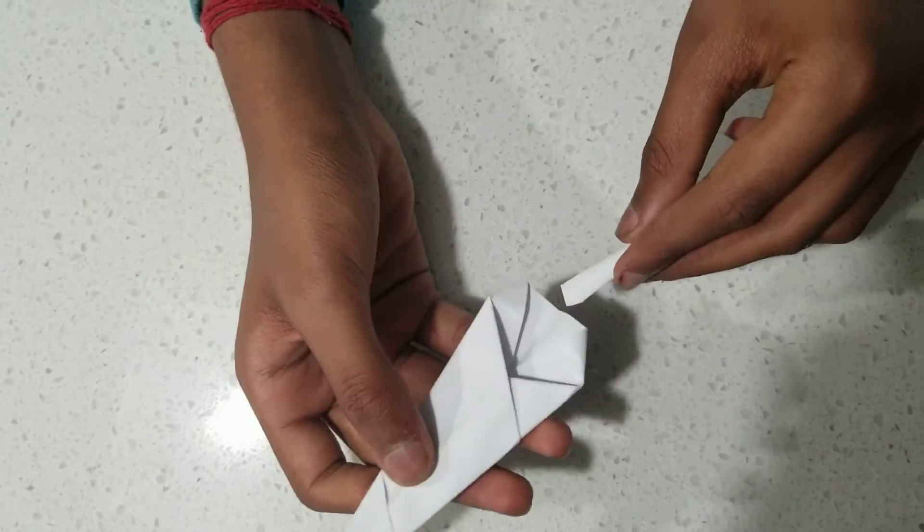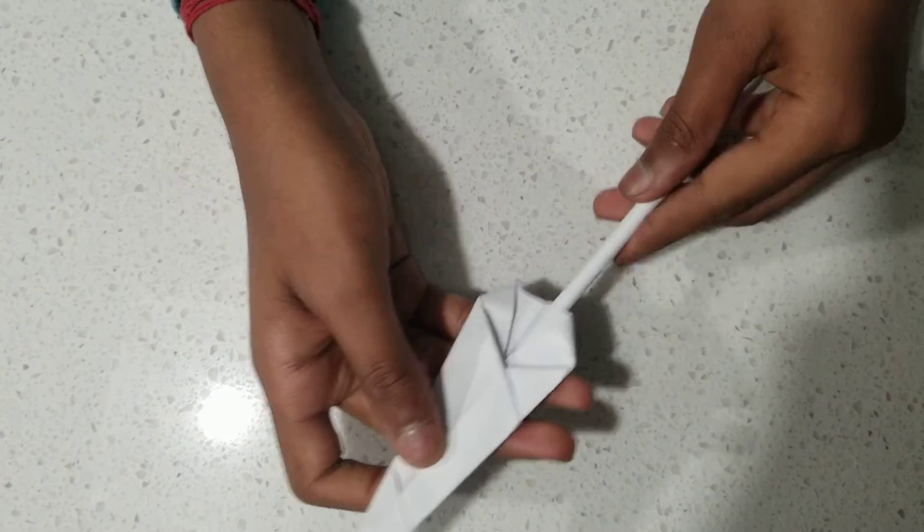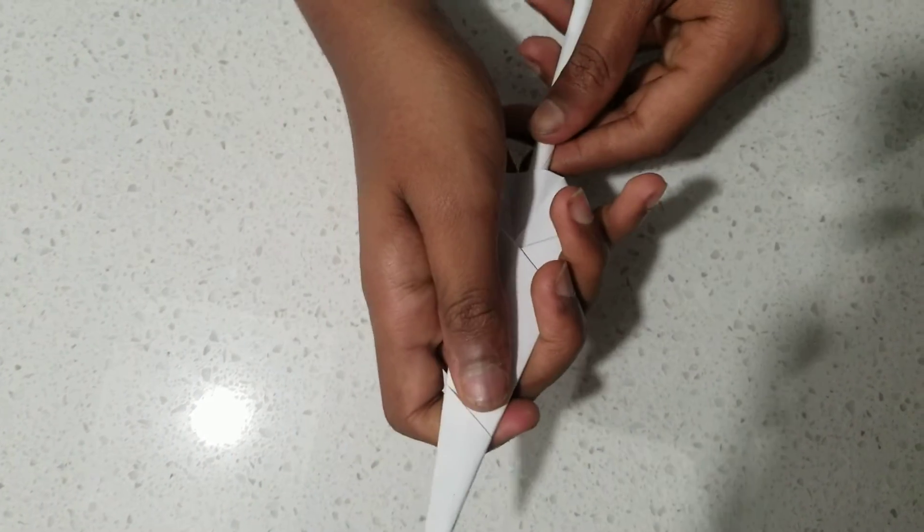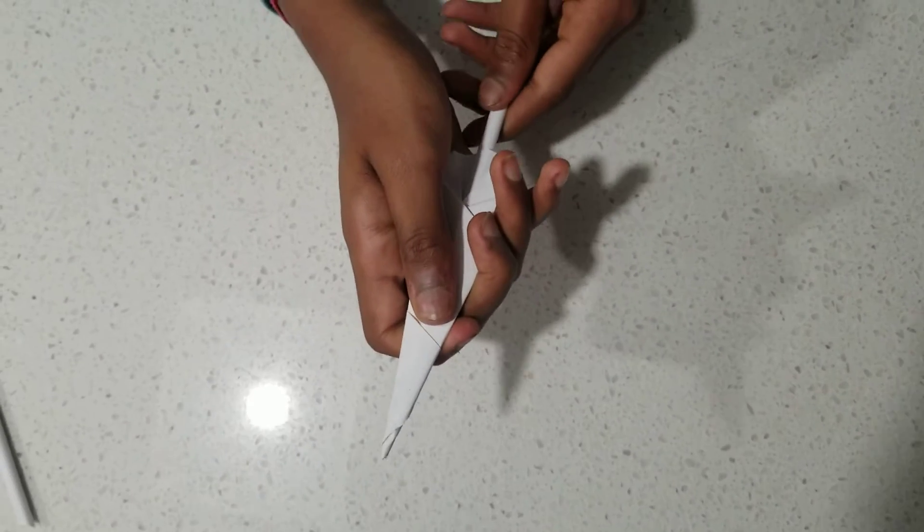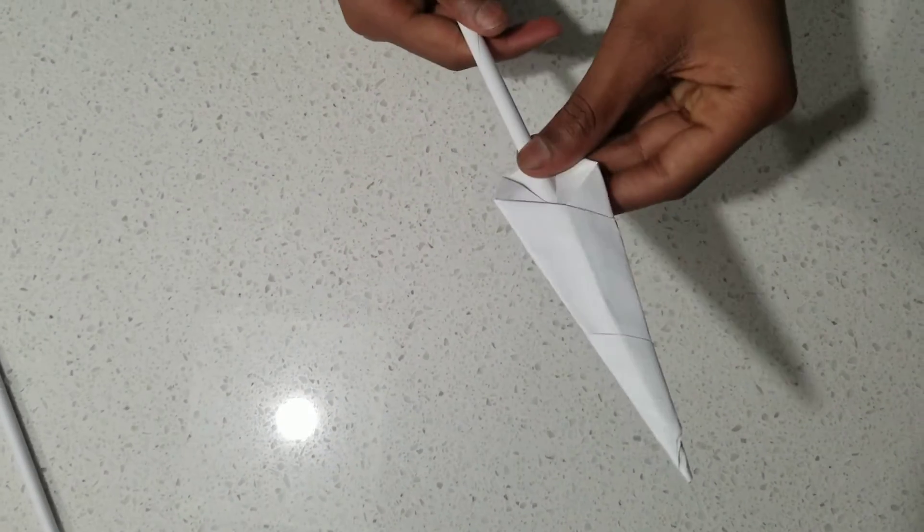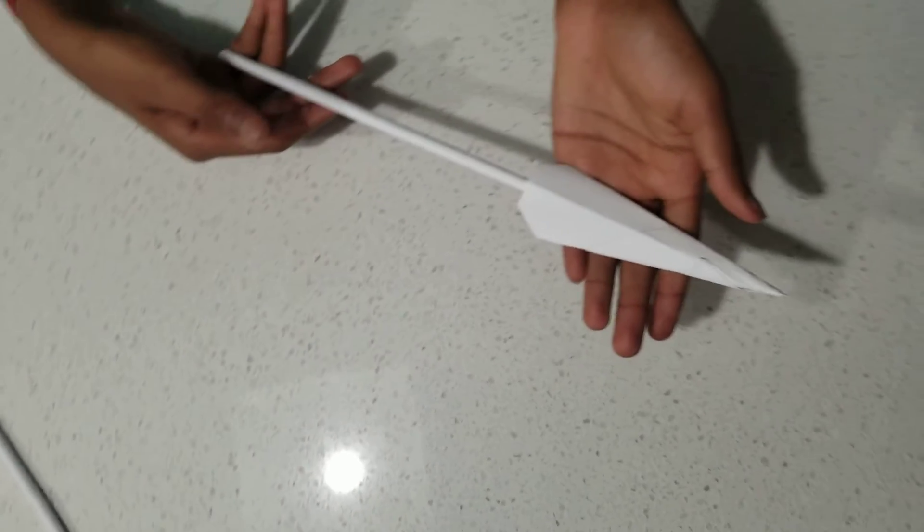Sometimes it helps if you flatten this part and glue it, but I won't do that. It's only if it's really hard. Stick it in as much as you can without tearing anything. And you've got your origami arrow.